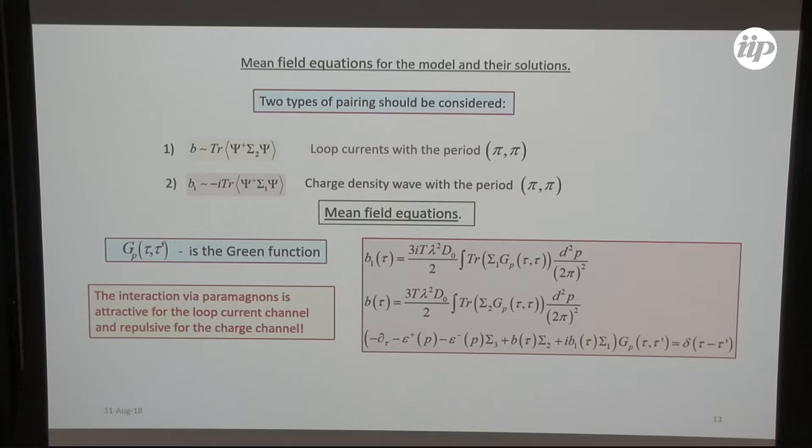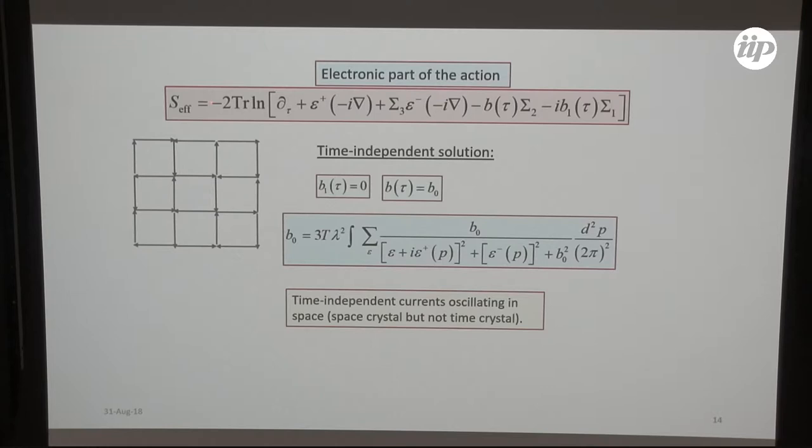If one considers the Green function for this system, these are self-consistency equations. This solution can be immediately found. This is electronic part of this action containing sigma matrices, Pauli matrices of pseudo spin. And one can immediately write time-independent solution, putting this charge B1 equal to zero and just looking for the current.